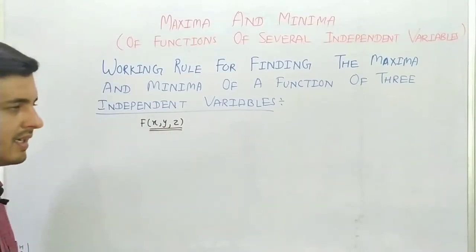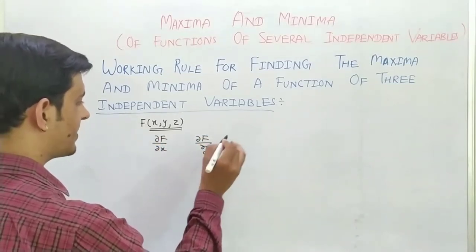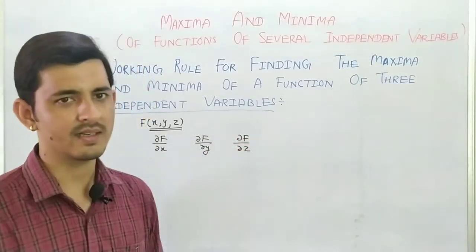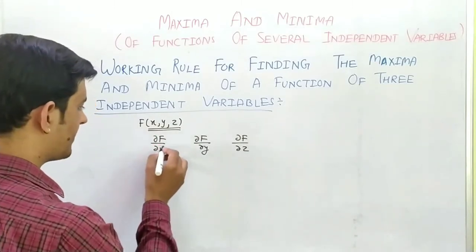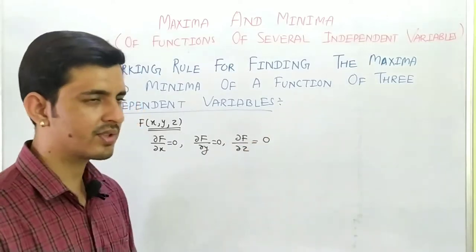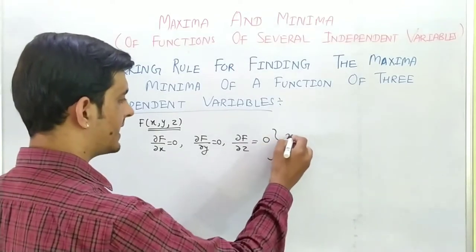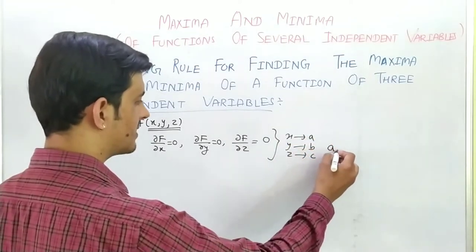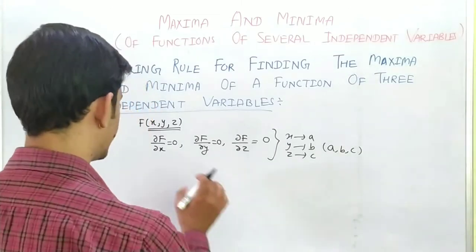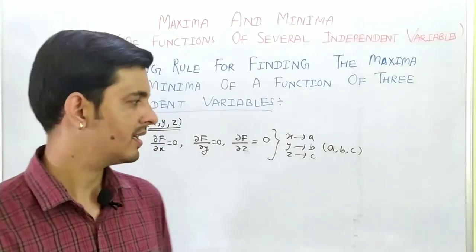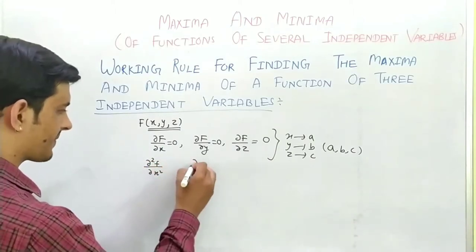So, what do you do? This function will be differentiated with respect to x, with respect to y, and with respect to z — giving three equations. The necessary condition for a function to be maximum or minimum is: del f upon del x = 0, del f upon del y = 0, del f upon del z = 0. If these give the point x = a, y = b, z = c, this point is called the stationary point.